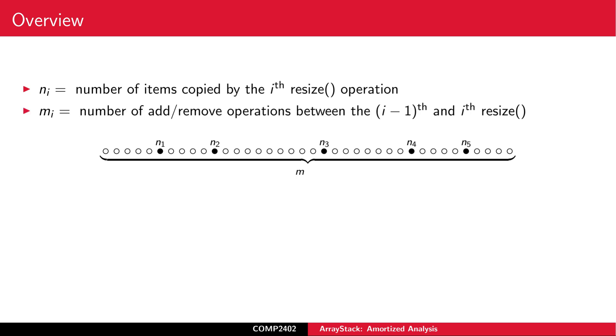Now that we've established this, we can take a step back and look at an entire sequence of M add and remove operations. Some of these add and remove operations trigger a resize operation. Suppose that during the Ith resize operation, N sub I elements are copied. Let M sub I denote the number of add or remove operations between the I minus first and Ith resize operation. We've already established that M sub I is bigger than or equal to N sub I over 2. There are at least N sub I over 2 add or remove operations that have to occur before the Ith resize, but after the I minus first resize.